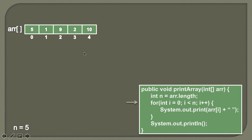It means for the last index, four should be less than five. Because when i will be equal to five, we know that i has crossed the boundaries of this array, and therefore we'll get an exception. So we'll iterate till i is less than n. We'll start with i equal to zero, so i is pointing to the zeroth index.